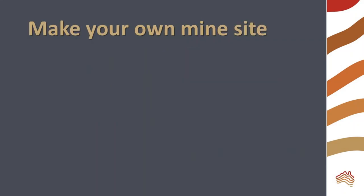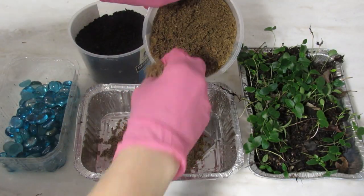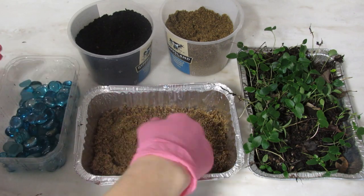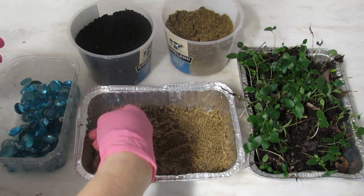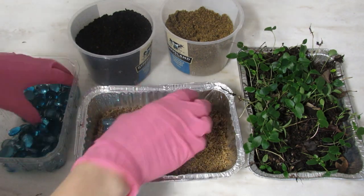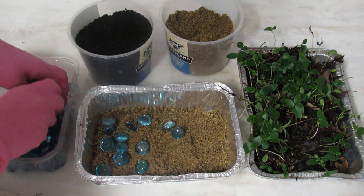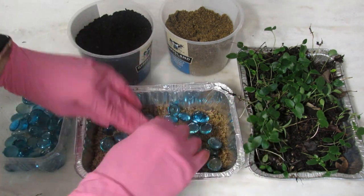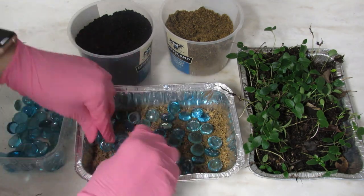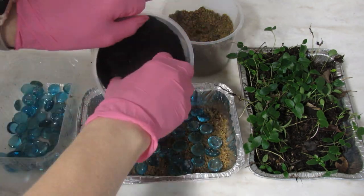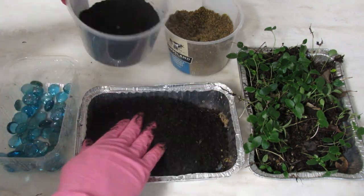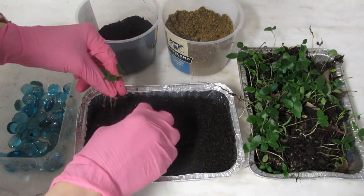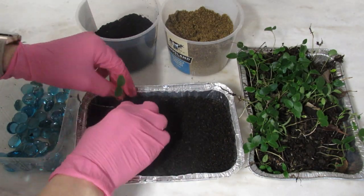Make your own mine site using the materials you have gathered. First, put a layer of sand in the pan — this represents the bedrock in the area. Place your ore on top of the sand and then cover with soil. Plant some of your little plants or grow grass on the site if you have time.